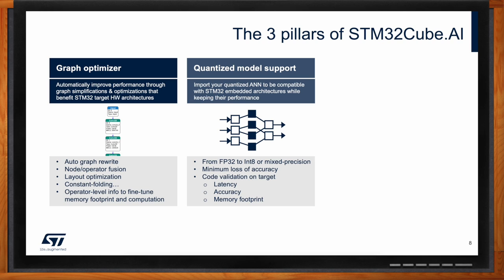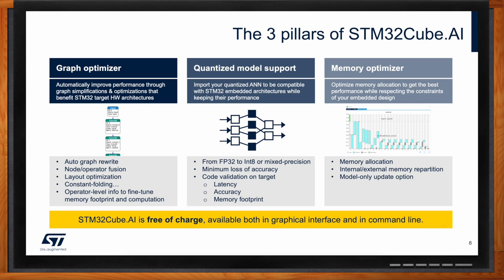The last pillar is memory optimization, linked to the graph optimizer. Cube AI gives you feedback on how memory is allocated: the footprint of each layer and how memory is allocated by layer and by memory segment or partition. This is extremely powerful if your model isn't fitting on your platform — you can see which layer uses 20–30% of total RAM and decide to either leave it and optimize everything else, or quantize just that layer. The memory optimizer — and there is an equivalent for latency — gives you a strong map of where to go next to make your project successful.